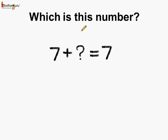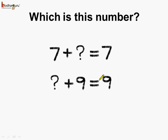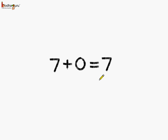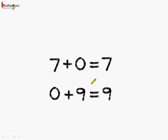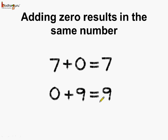Now let us figure out: what can be added to seven so that the answer is seven only? Or what can we add to nine such that the answer remains nine — which means the number remains unchanged? If we add zero to seven, the answer is seven. If we add zero to nine, the answer is nine. Adding zero results in the same number.